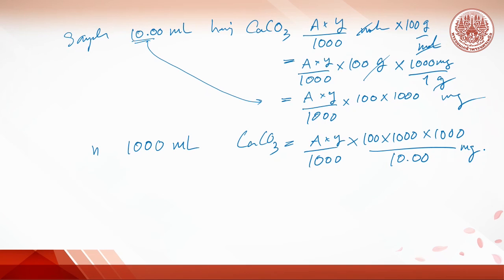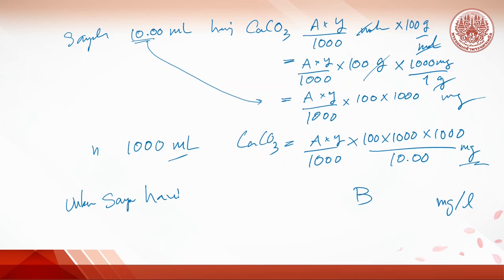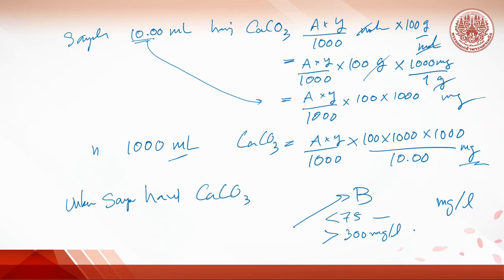So the unknown sample has a calcium carbonate equivalent of B milligrams per liter. We then compare this value to the classification guidelines. For example, if B is less than 75 mg/L, the water is slightly hard. If B is more than 300 mg/L, it is classified as very hard water.